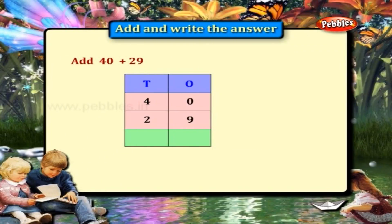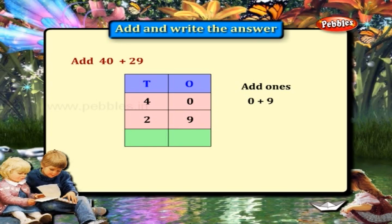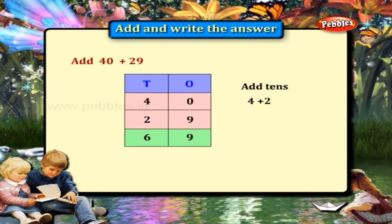40 plus 29. Add the 1's place: 0 plus 9 is equal to 9. Add the 10's place: 4 plus 2 is equal to 6. Answer: 69.